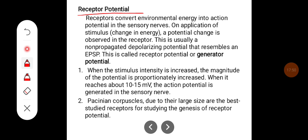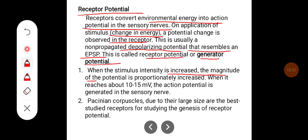Coming to receptor potential. Receptors convert environmental energy into action potential in the sensory nerves. On application of a stimulus — a change in energy — a potential change is observed in the receptor. This is usually a non-propagated depolarizing potential that resembles an EPSP (excitatory post-synaptic potential), called the receptor potential or generator potential. When the stimulus intensity is increased, the magnitude of the potential proportionately increases, and when it reaches about 10 to 15 millivolts, the action potential is generated in the sensory nerve fiber.